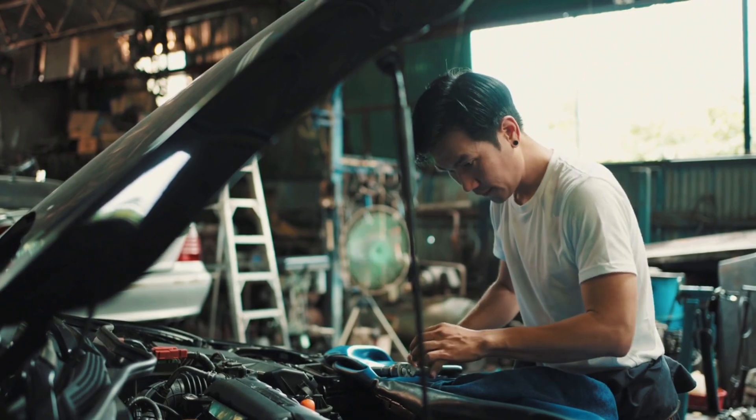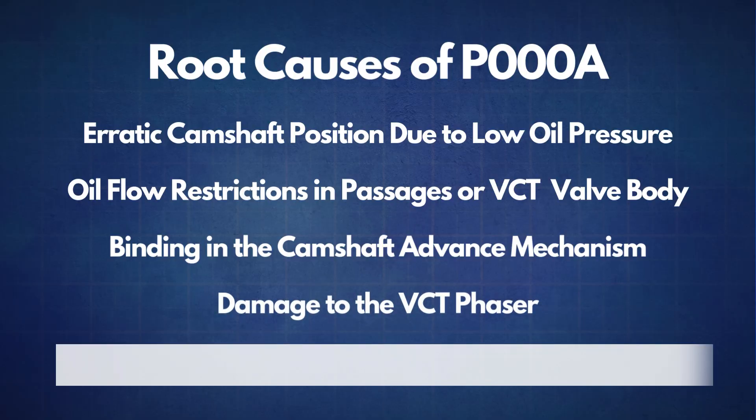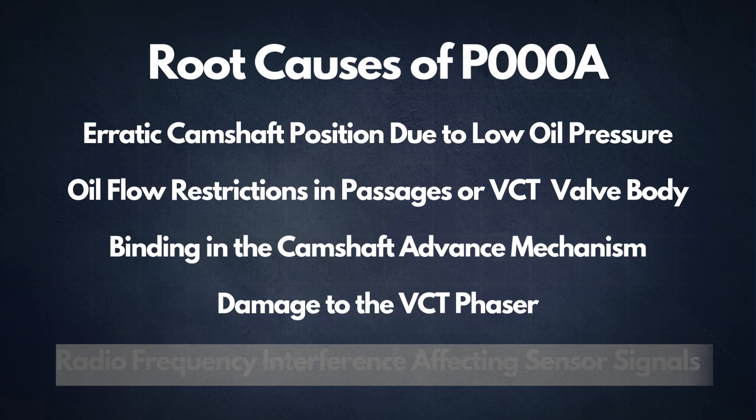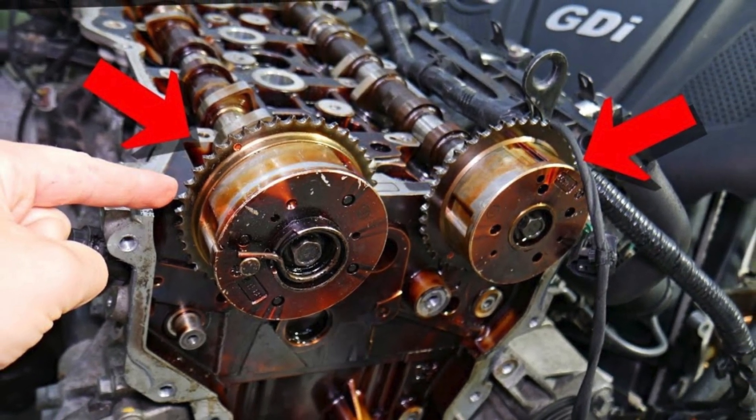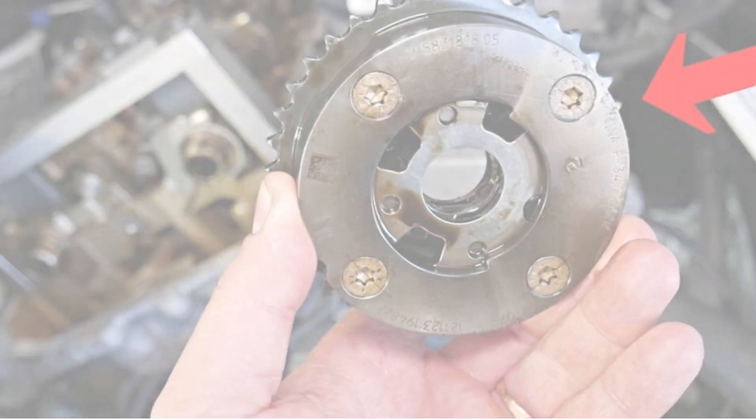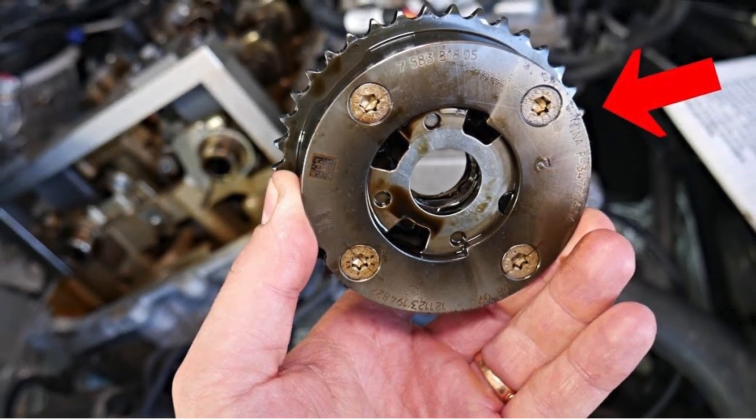The fourth cause is damage to the VCT phaser. A damaged VCT phaser can result in improper camshaft timing. The phaser controls the angle of the camshaft, and if it's malfunctioning, you'll likely see error codes like P000A.